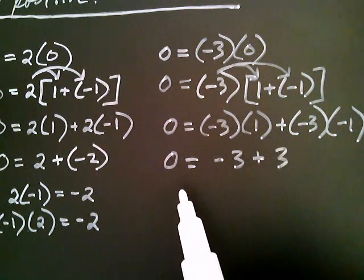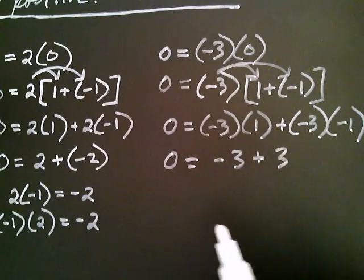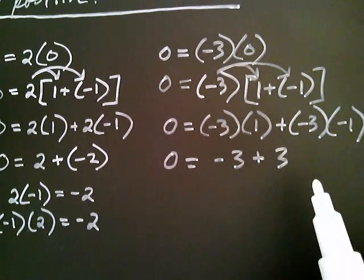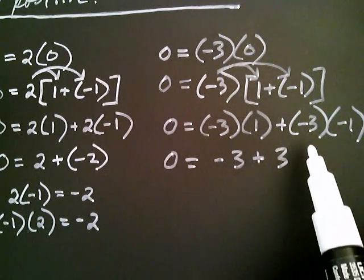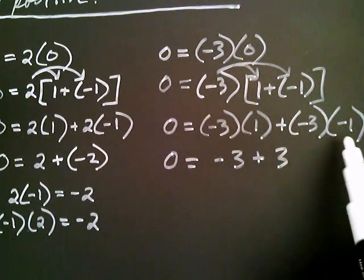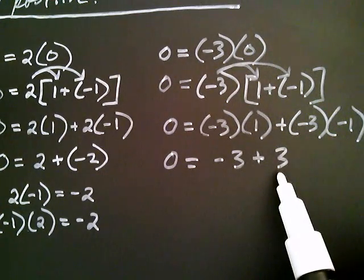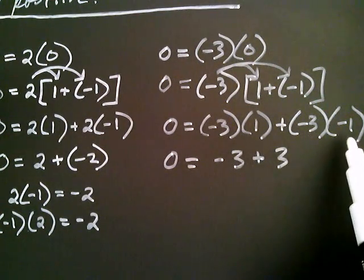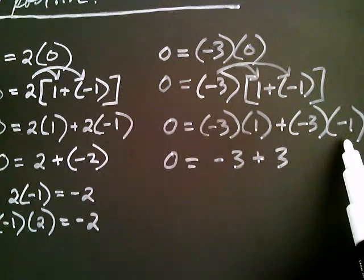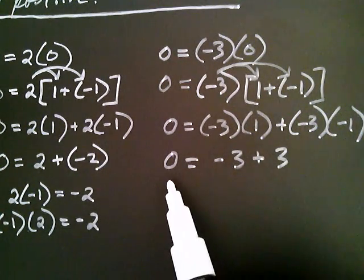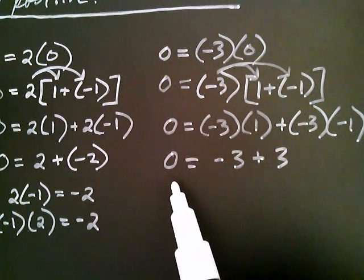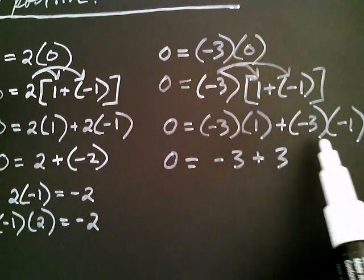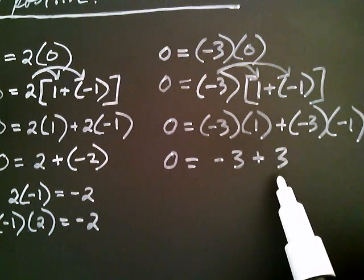What that means is that, just like before, negative three times negative one must equal three. We weren't sure what negative three times negative one was, but now — because we had zero on the left-hand side — negative three times negative one had to be positive three.